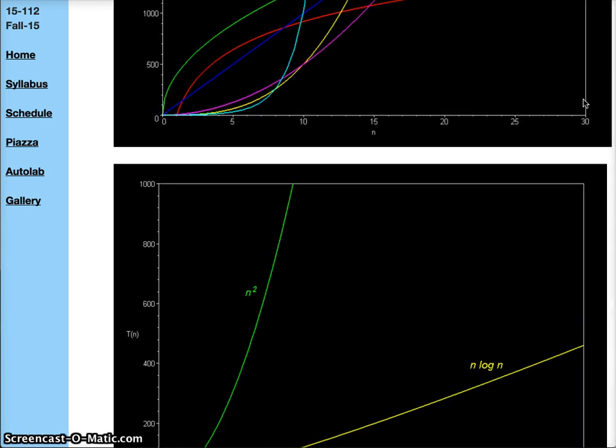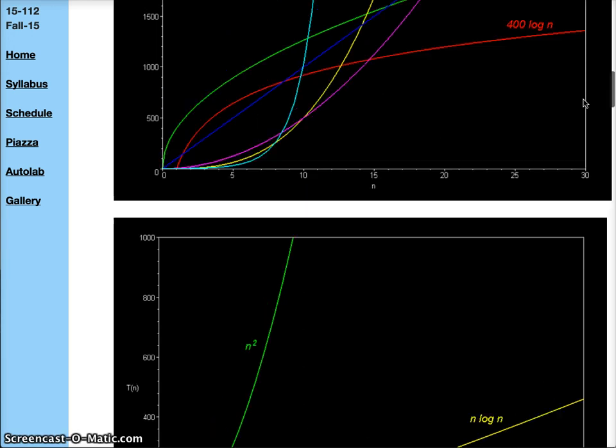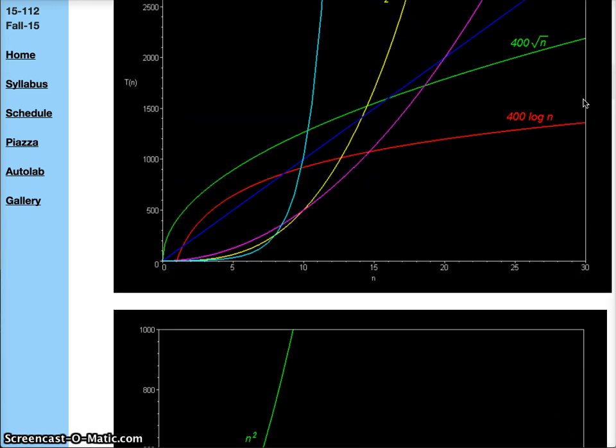There are different function families, some of them being much slower than others, exponential being the slowest and logarithmic being one of the fastest. When we write our programs, we want to be able to say that this function is better than the other one because it is in a lower function family.